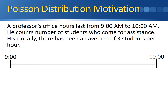He sits down at his desk at 9 o'clock and waits for the first person to arrive. The first person arrives at 9:03. The professor helps the student out and sends them on their way, then waits for the next student to arrive. That next person arrives 17 minutes later at 9:20. He answers some questions and sends the student on their way, then waits for the next one. The next person shows up at 9:32, gets some help, and leaves. The final student shows up five minutes before office hours are over at 9:55 for some last-minute questions. The professor's office hour then ends at 10 o'clock.